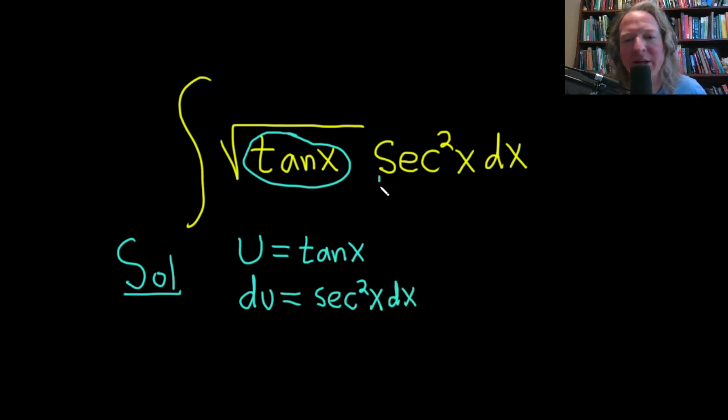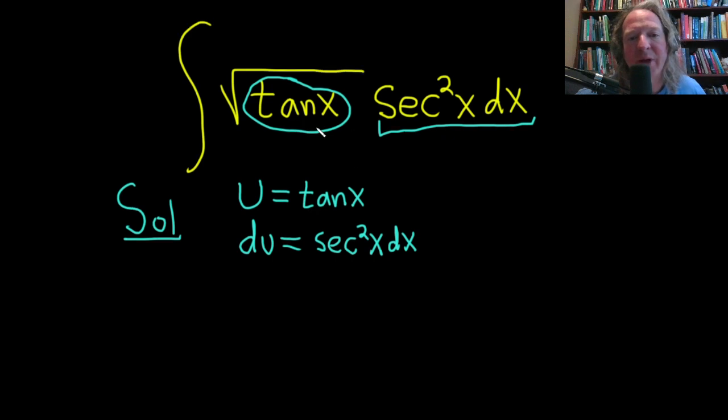That's exactly what we have here: secant squared x dx. So it works out really nicely in this problem. Despite it looking a little bit intimidating, it's actually very easy.